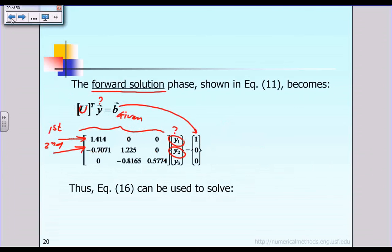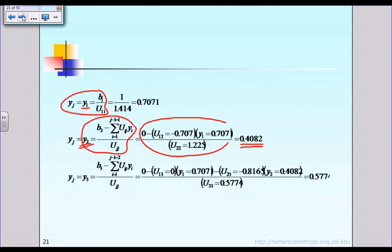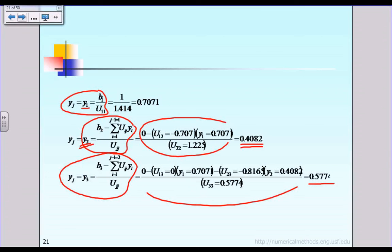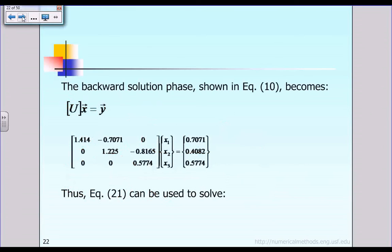Finally, looking at the third equation, we solve for the unknown Y3, as indicated by the formula. After substituting numerical values, we solve for Y3. That concludes phase 2. To summarize: at the end of phase 1 we know the factorized matrix U, and at the end of phase 2 we know the intermediate vector Y.